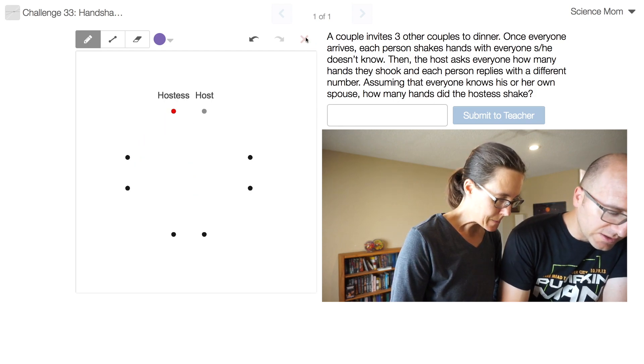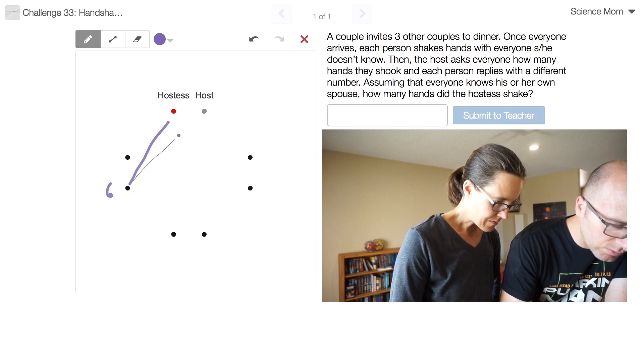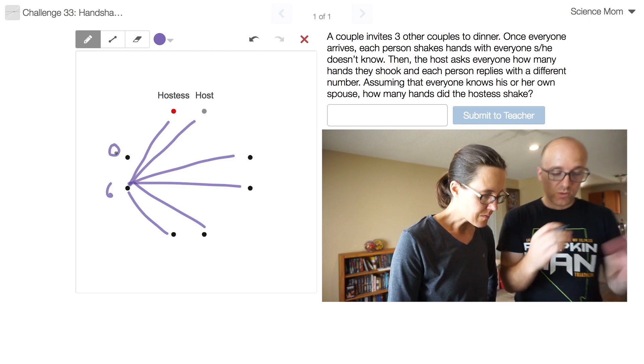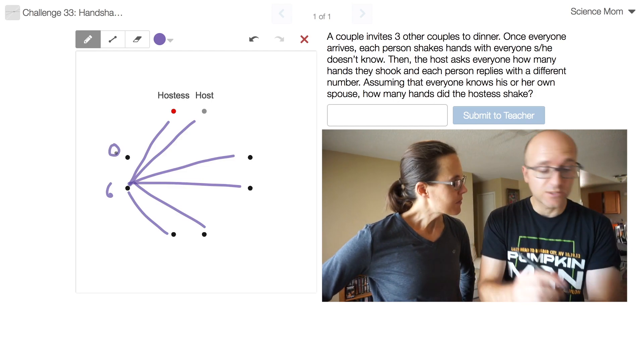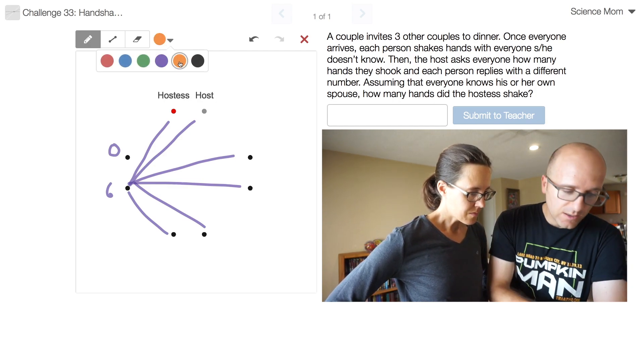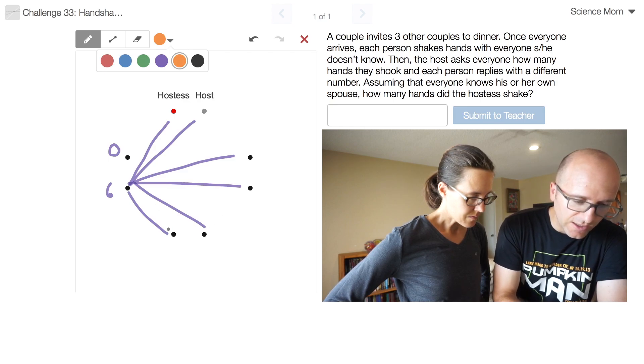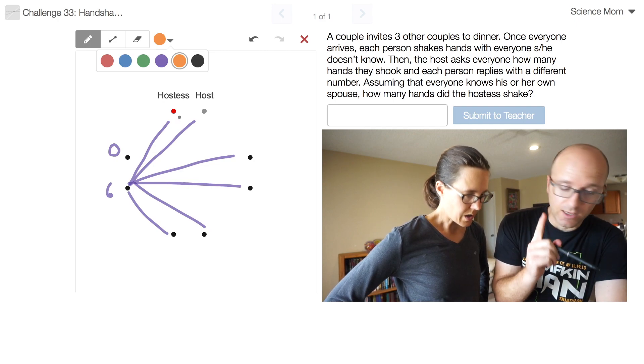Let's go through the logic. All right, so we first of all said, could the hostess have shaken six hands? And the answer was no, because then there would be no zero. All right, so that meant that someone else had to do six, and we just picked one. Two, three, four, five, six. And that meant that this one had to be the zero, because everyone else has already shaken a hand. All right, we're going to do the exact same piece of logic. Could the hostess have shaken five hands?